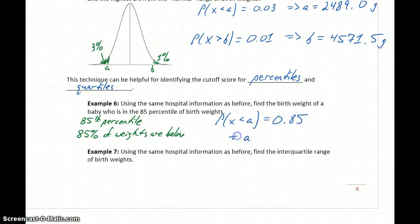So our value for A in this case is 3,933, approximately, grams. If a newborn is born weighing 3,933 grams, they're in the 85th percentile because 85% of all the other values are below that cutoff score.